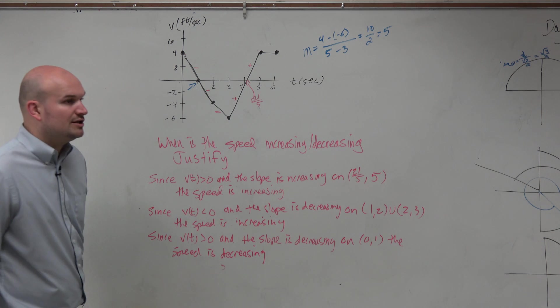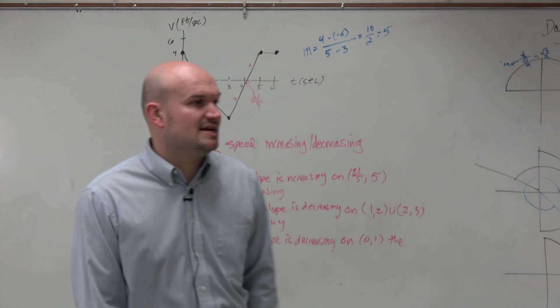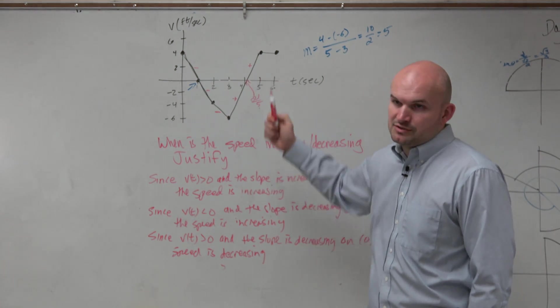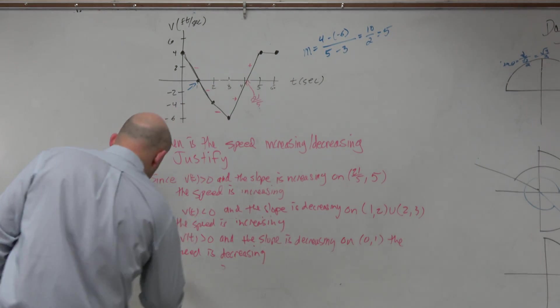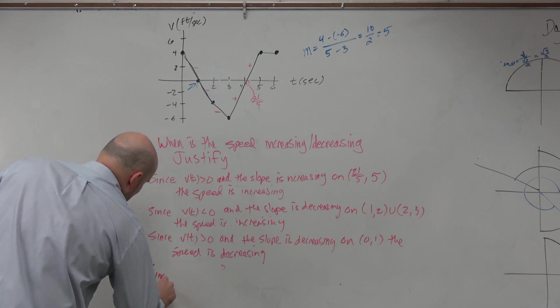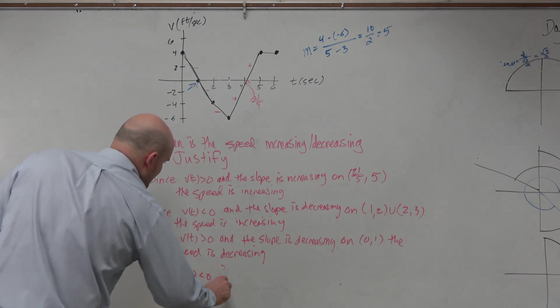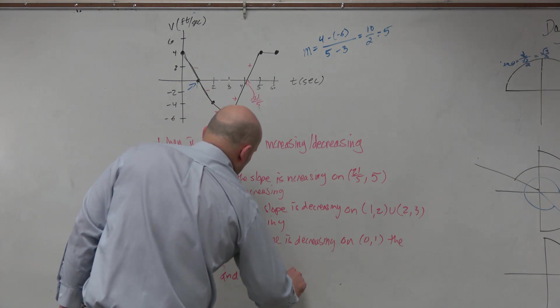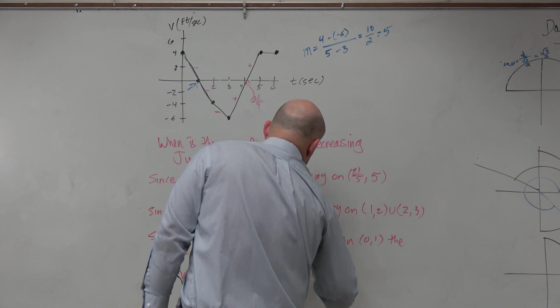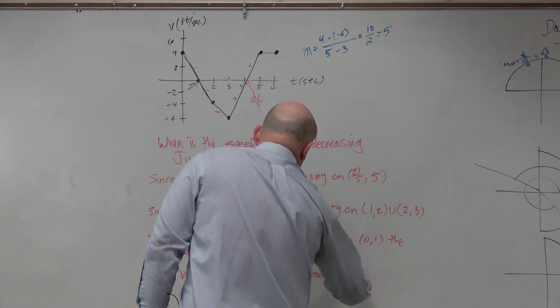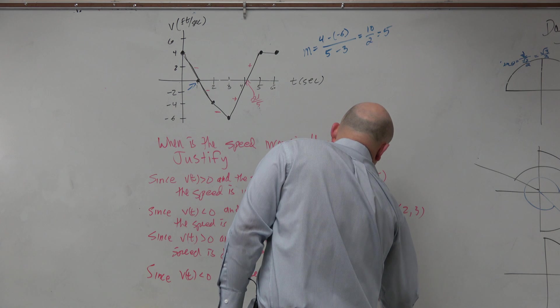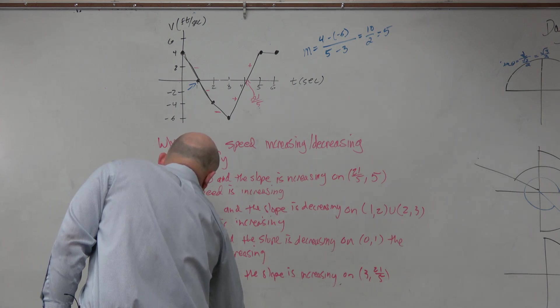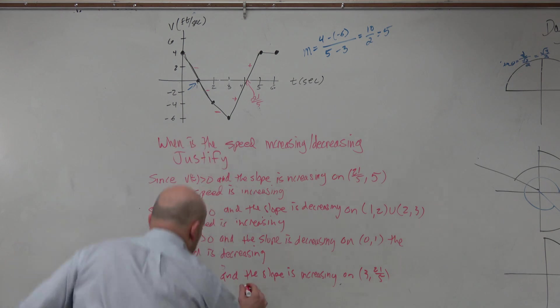And then is there any other points where we have maybe the velocity is negative but the slope is increasing? Yep, from 3 to 21/5, right? Since v sub t is less than 0 and the slope is increasing on 3 to 21 over 5, the speed is decreasing.